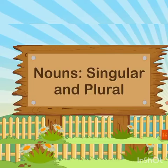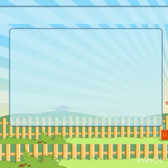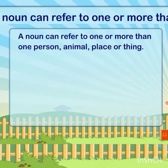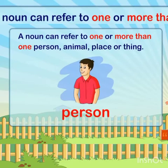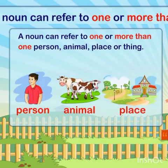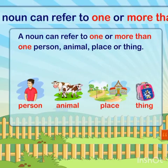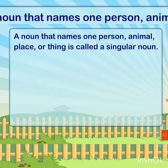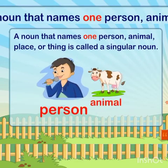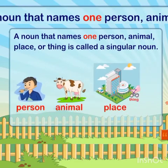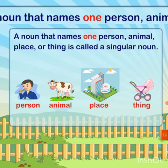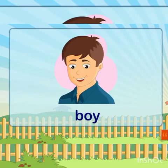We will further discuss nouns — singular and plurals. A noun can refer to one or more than one person, animal, place, or thing. As you can see in the picture, a noun that names one person, animal, place, or thing is called a singular noun. So, one person, one animal, one place, and one thing — they are singular nouns.